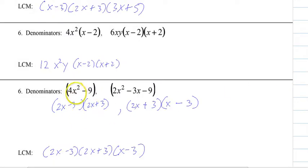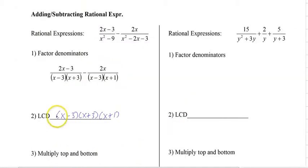And so for our LCD and LCMs, which is the same thing, we have to take and factor them. And then we write every single type of factor that we have down. And if there is an exponent, then we pick the largest exponent. So now we have our LCD.